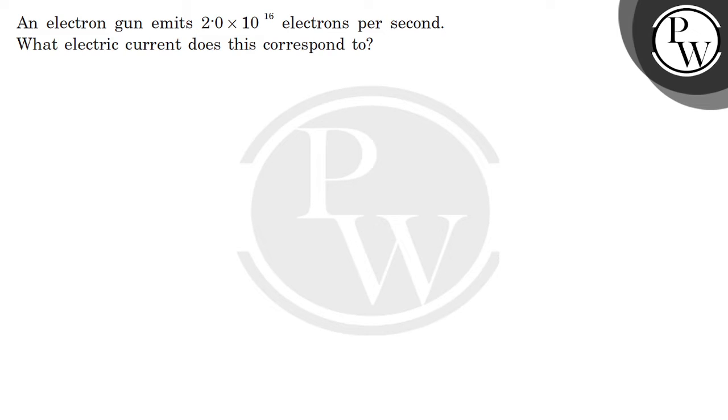Hello, so in the given question we have been given an electron gun emits 2.0 into 10 to power 16 electrons per second. What is the electric current that this corresponds to? So we can start as number of electrons per second is equal to 2 into 10 to power 16.